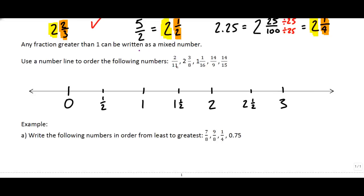Take a look at the first one: two-over-eleven. Imagine taking a pie, splitting it eleven ways, and having just two pieces. Two-over-eleven would be a very small amount, so it would be between zero and one-half, but a lot closer to zero than to one-half. So I'm going to put two-over-eleven right there.